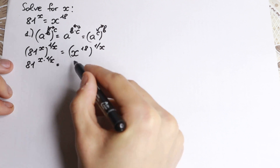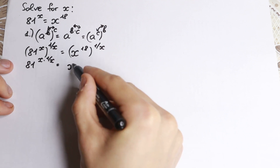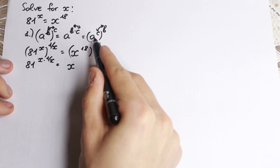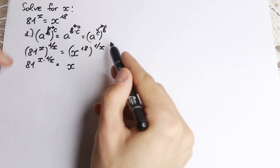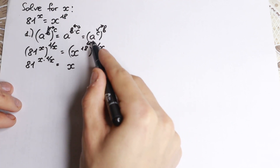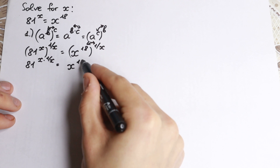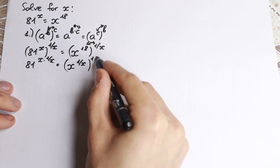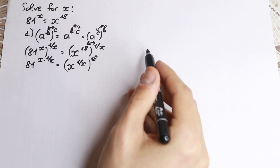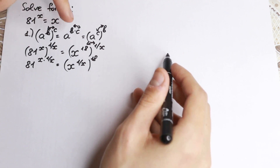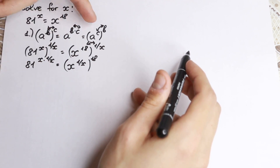As a result, x times 1 over x — we have 81 to the power x times 1 over x — equals x. But on the right hand side, let's apply the rule of interchange instead. So we can swap those powers, and we will have x to the power 1 over x, all raised to the power 18. Here we apply the second rule by multiplying, and in the third case we apply the rule of interchange.